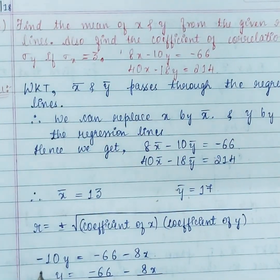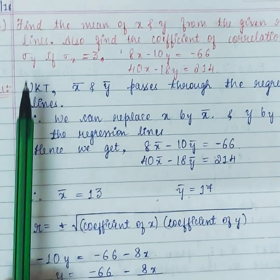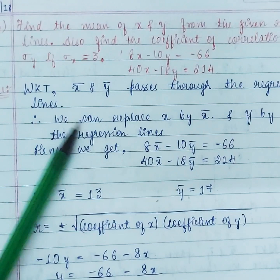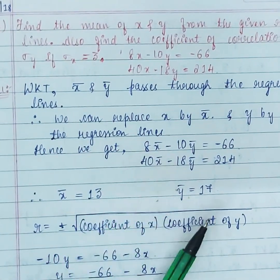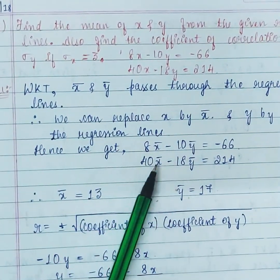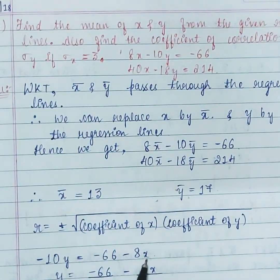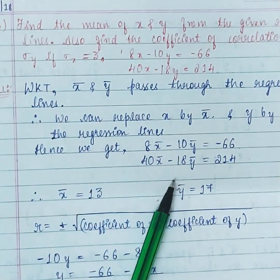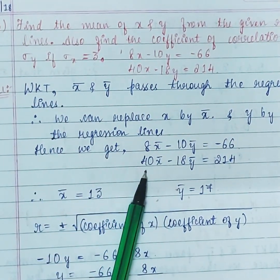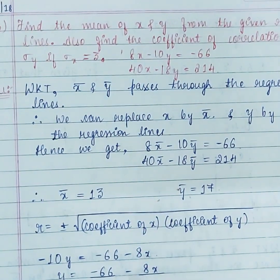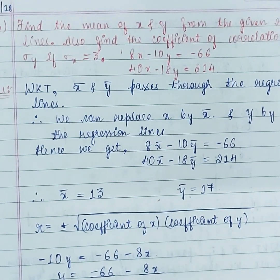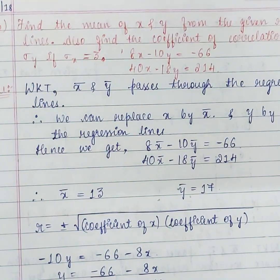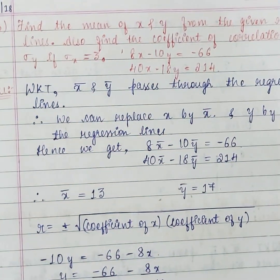What we've seen today: finding r (the correlation coefficient), finding regression lines, and finding y for a given x or x for a given y. In the next video, we'll look at problems where two regression lines are given and you need to find r — including a trick to determine which line is x on y and which is y on x. Thank you.